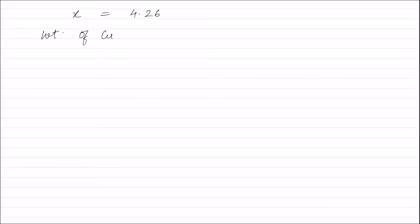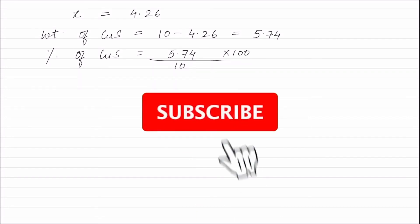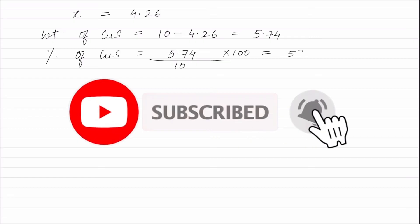Solving, the weight of Cu₂S is 4.26 grams, so the weight of CuS is 10 − 4.26 = 5.74 grams. Therefore, the percentage of CuS in the mixture is (5.74/10) × 100 = 57.4%.